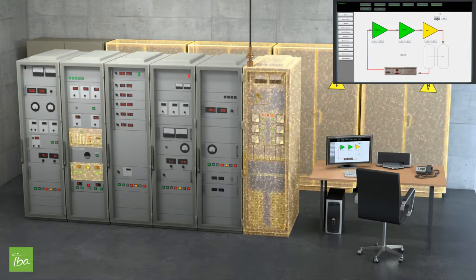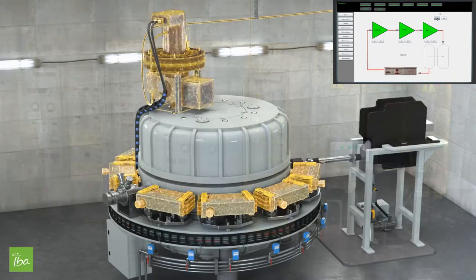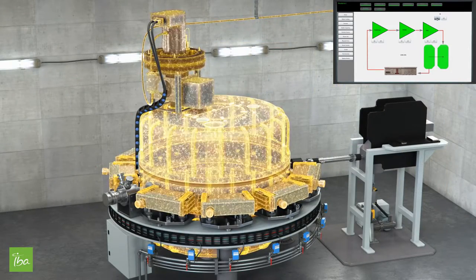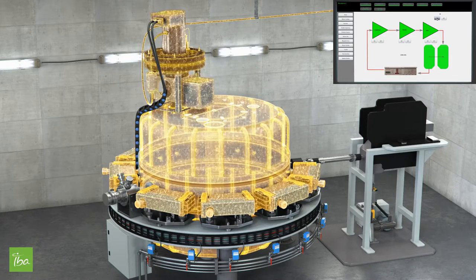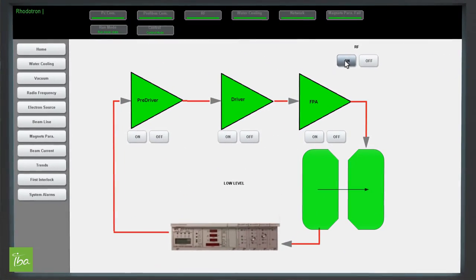And finally, a last time by the final power amplifier located on top of the cavity. This final amplifier is coupled to the cavity to generate the electric field in the machine. Thanks to the modular design of the second generation Rhodotron, this complete RF chain can be doubled or tripled in order to provide a more powerful beam up to 700 kilowatts.